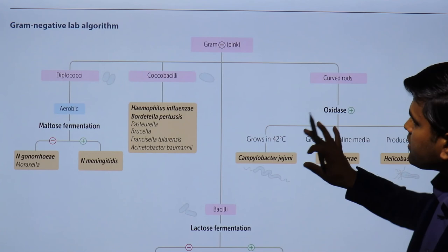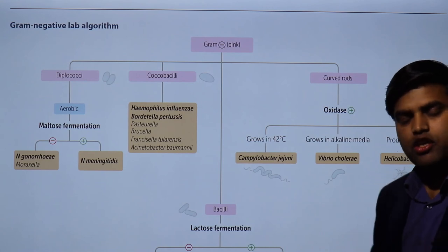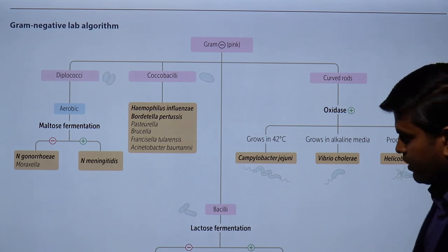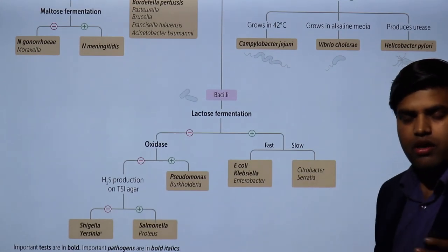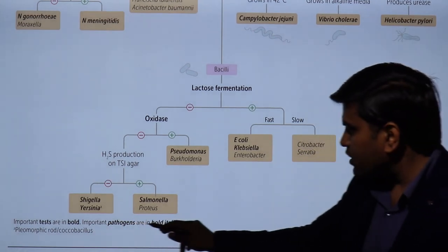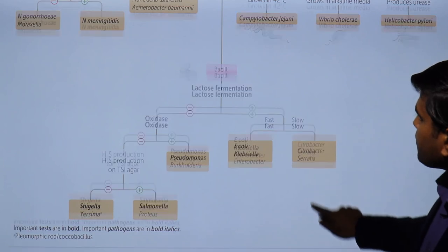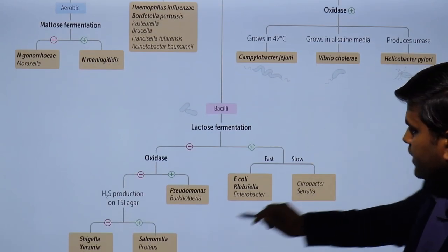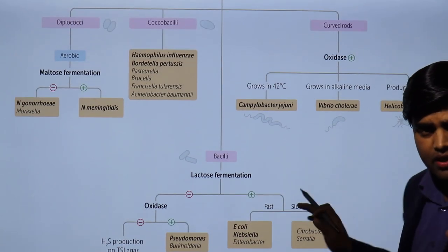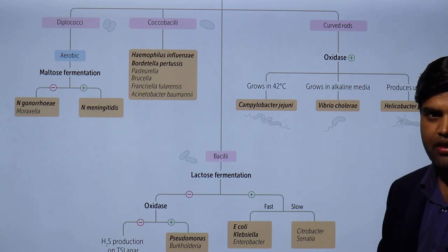Gram-negative bacteria are very medically important and we need to know all the diseases provided by each bacterium — we will cover these in subsequent lectures. Important tests and pathogens are highlighted in bold italic in the textbook. Some organisms like Yersinia have pleomorphic rod or coccobacilli morphology. This is a very important lecture where you have to remember all the medically important gram-negative bacteria. Thank you.